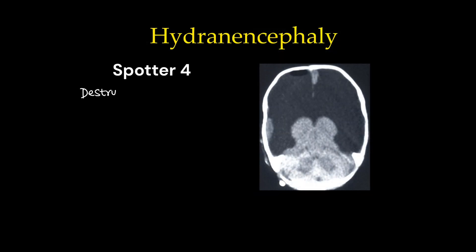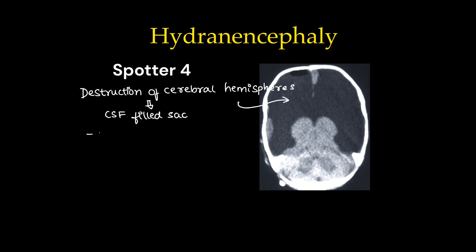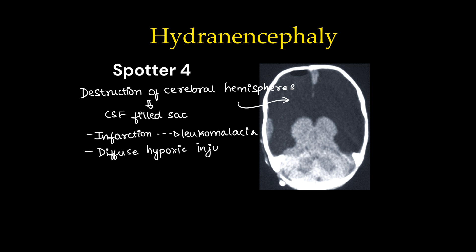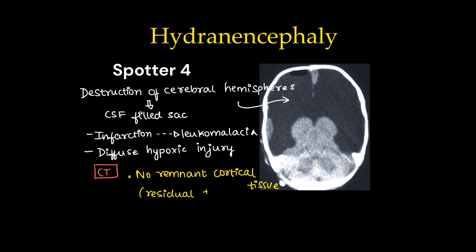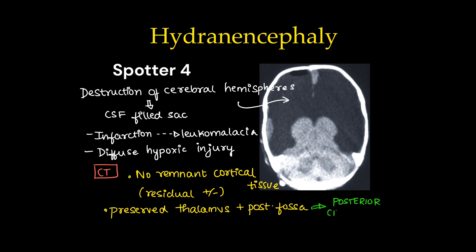Spotter 4 is also an antenatally detected neuroanomaly — this is hydranencephaly, with destruction of the cerebral hemispheres replaced by a CSF-filled sac with a thin layer of cerebrum along the skull. Multiple theories exist: it could be due to infarction leading to leukomalacia or diffuse hypoxic injury. CT shows no remnant cortical tissue, or sometimes residual cortical tissue may be present. There is preserved thalamus and posterior fossa structures because the posterior circulation is spared from ischemia, while the anterior circulation structures are destroyed.